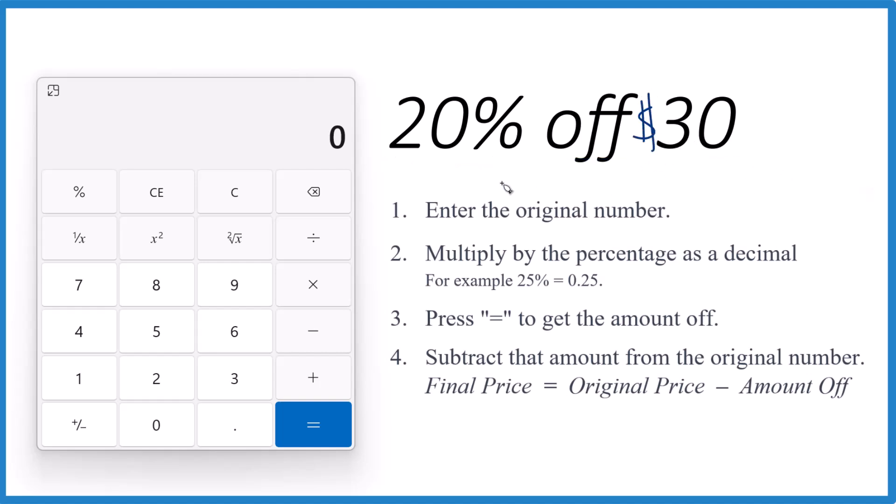So we take the original number, that's the 30, right here. We multiply it by a percentage, this percentage here, as a decimal.